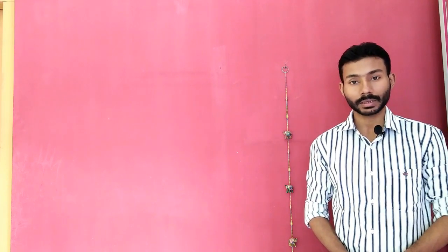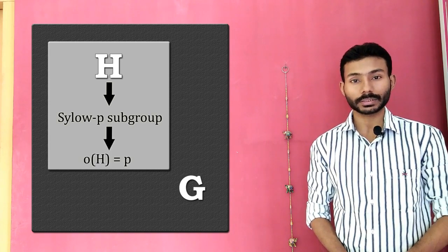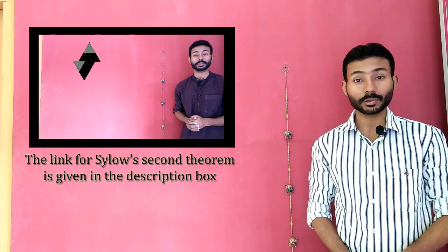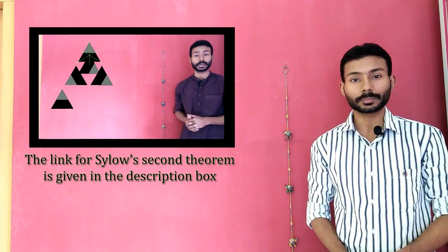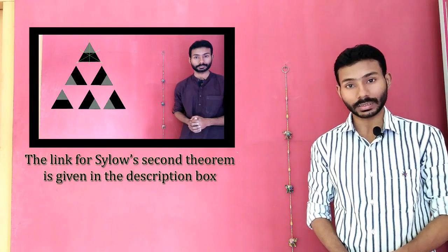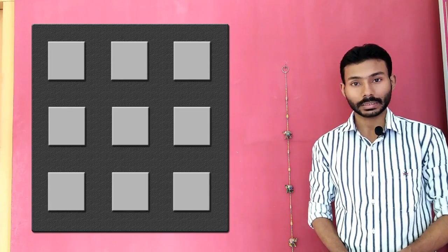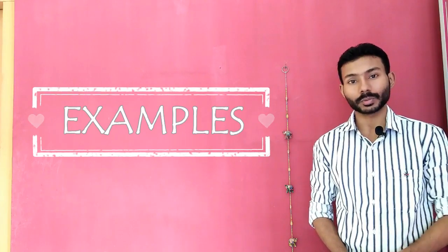In abstract algebra, a subgroup of a group is said to be a Sylow p-subgroup if the order of that subgroup is p, where p is any prime number. While Sylow's Second Theorem tells us that any two Sylow p-subgroups of a finite group are conjugate, Sylow's Third Theorem tells us about the number of Sylow p-subgroups that a finite group contains. Before getting into a textbook statement of this theorem, let's take a look at a few examples.